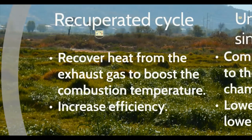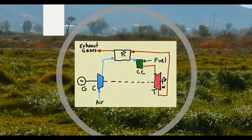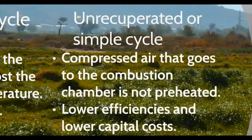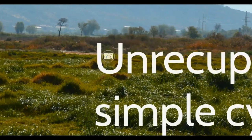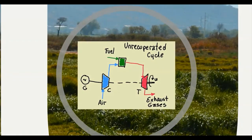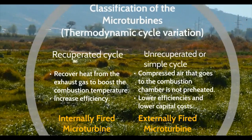Microturbines can also be distinguished by the variation in their thermodynamic cycle. There are recuperated cycle microturbines that recover heat from the exhaust gas to boost the temperature of combustion and increase the efficiency. In the case of the unrecuperated or simple cycle, it doesn't use the exhaust gas to preheat the compressed air. Therefore, it has lower electric efficiency, but also requires lower capital costs than the recuperated cycle microturbines.